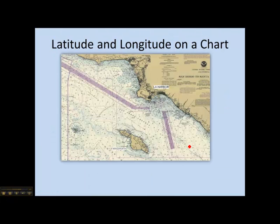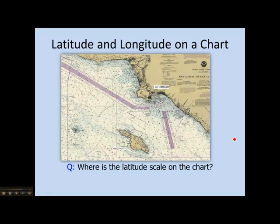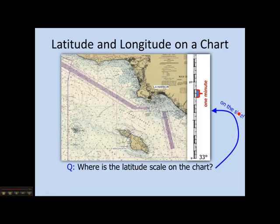Now, on a typical marine chart, it might look something like this. This is our typical marine chart for San Diego to Santa Rosa Island. And where are the latitude lines on here? So where's the latitude scale on the chart? Where that is, it's over on the side. And this is what it looks like enlarged here. So there's the symbol for degrees. And then each degree is broken up into 60 minutes, actually. So one degree is equal to 60 minutes.